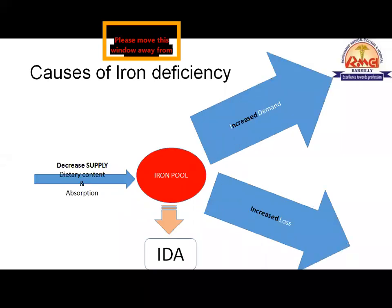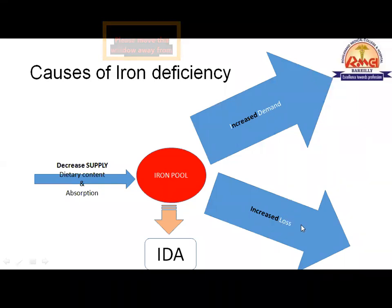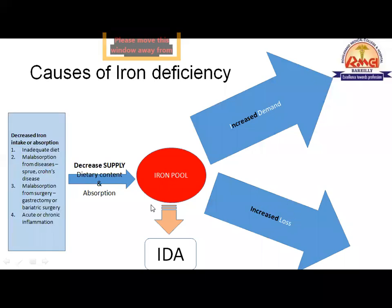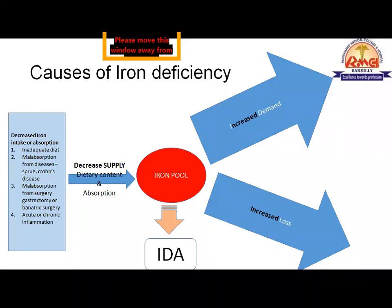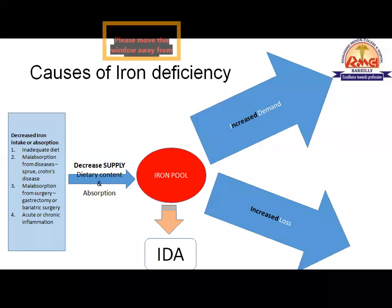If supply decreases, the iron pool decreases, leading to iron deficiency anemia. Decreased supply may be due to inadequate dietary content or malabsorption from the gut. Malabsorption may be due to disease processes like tropical sprue or Crohn's disease, or surgical causes. Importantly, iron is absorbed from the proximal intestine — mainly the duodenum. Any pathology affecting the proximal intestine will lead to iron deficiency, while involvement of the distal intestine has no effect on iron absorption.